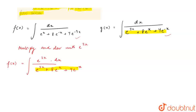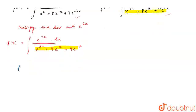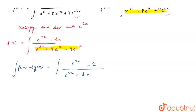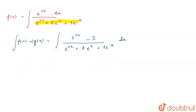Now we have the integration of f(x) minus 2g(x), which becomes integration of (e^(2x) - 2) upon (e^(3x) + 8e^x + 4e^(-x)) dx. Moving forward, to solve this integration, we will multiply and divide by e^x.